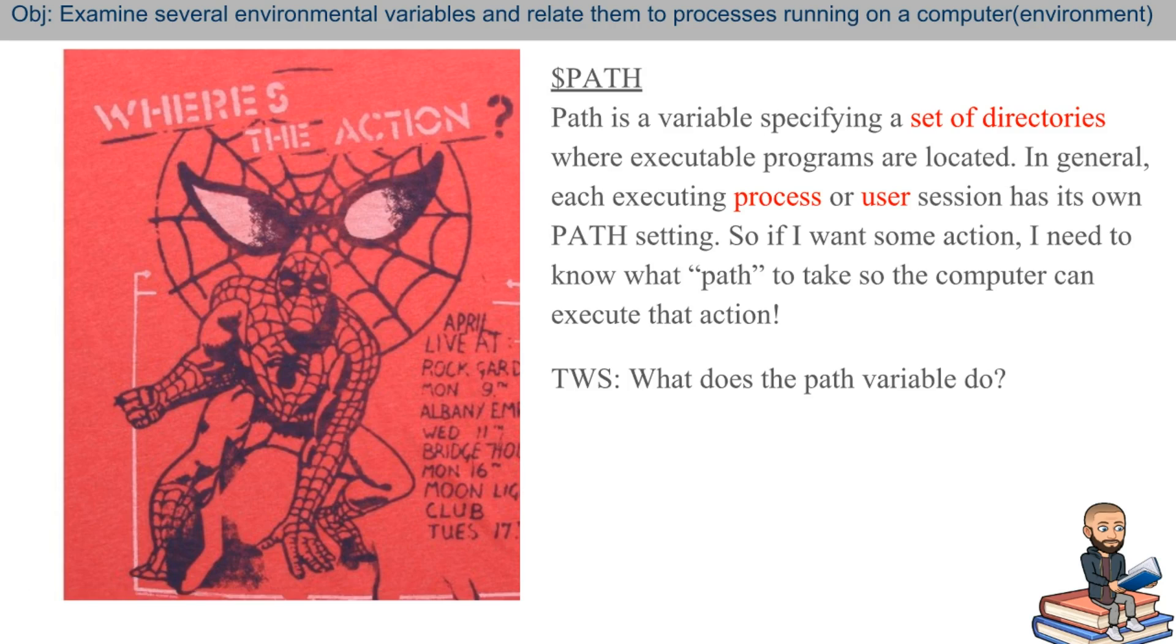Now let's talk a little bit more about path. That's one of the trickiest ones, which the good news is it's not tricky at all once you get it. It says here that the path is a variable specifying a set of directories. So we just looked at all those directory trees, right? This path specifies where executable programs are located. And in general, each executing process or user session has its own path setting. So if I want some action, I need to know what path to take so the computer can execute that action.